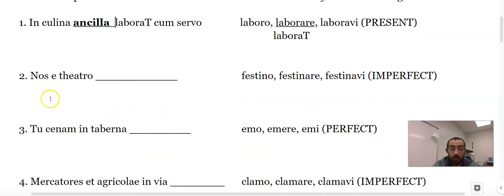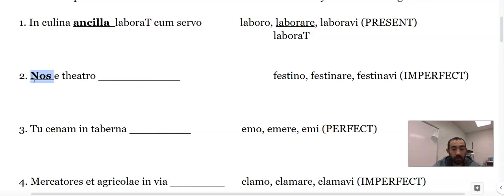Nos, we - here's our subject nos. It's a we, that's first person plural. It's more than one and we got to make this one imperfect tense. So it comes from the same place. Festino, festinare - take off the re, add ba, add my ending M-U-S. Festinabamus.